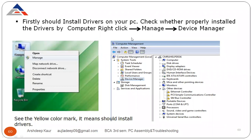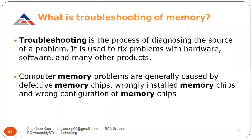We need to install drivers according to the devices shown. Right-click on Computer, go to Manage, then go to Device Manager. These are the steps for how to install the Windows 7 operating system on your computer.